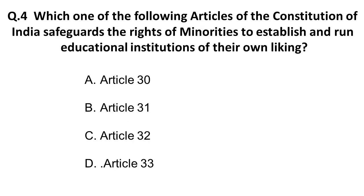Next question: which article of the Constitution of India safeguards the rights of minorities to establish and run educational institutions of their own liking? Options are Article 30, 31, 32, and 33. The correct answer is Article 30. It provides minorities the authority to establish and run educational institutions of their own liking. This is a very important question — remember Article 30 is the correct answer.